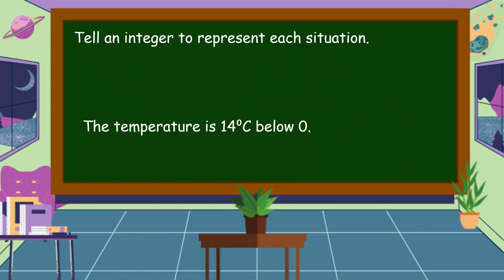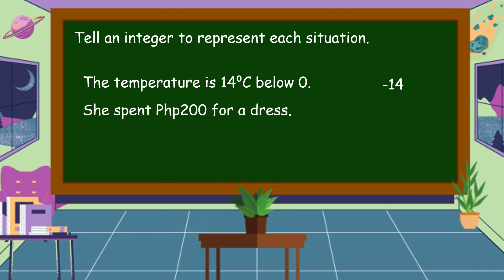Next example. The temperature is 14 degrees Celsius below zero. The answer is negative 14. She spent 200 pesos for a dress. The answer is negative 200. The altitude is 105 meters above sea level. The answer is positive 105.